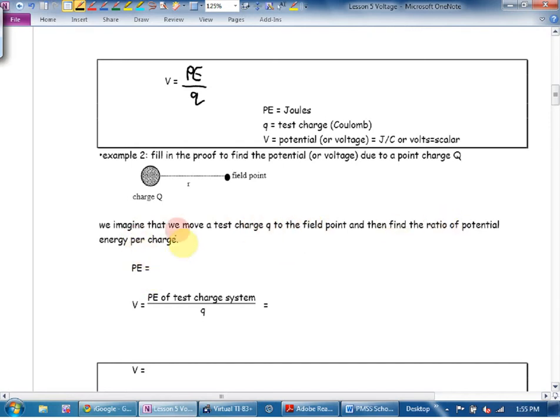Example two says fill in the proof to find the potential or voltage due to a point charge. So if we have to move a test charge to the field point and then find the ratio of energy per charge. Potential energy, we said yesterday, was K big Q little Q over R. Not R squared, Mr. Duick. That's force. Over R. Where big Q is the planetary fixed charge and little Q is the moving satellite charge.